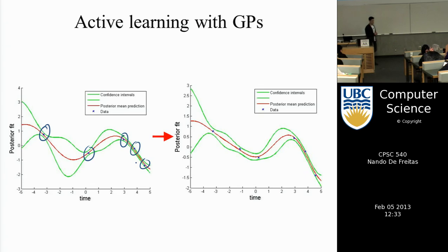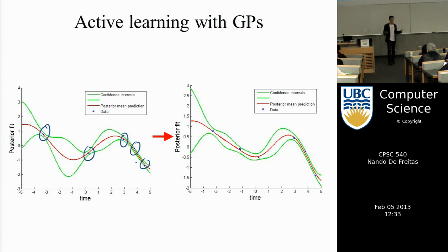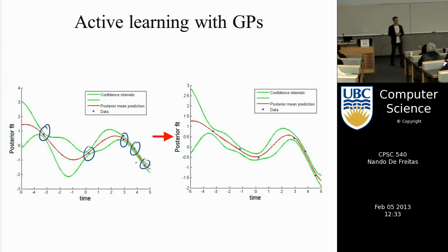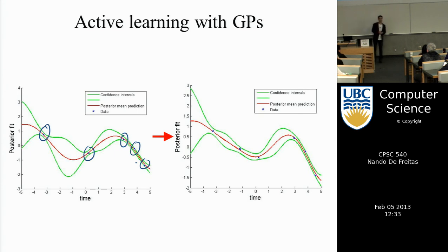The key to Gaussian processes is they capture our belief that a lot of functions in the real world are smooth. If you look at the space of natural images and sounds in the world, smoothness is a very reasonable assumption. So if the data we acquire from the world satisfies this property, we would expect Gaussian processes to be a very powerful way of modeling the world.